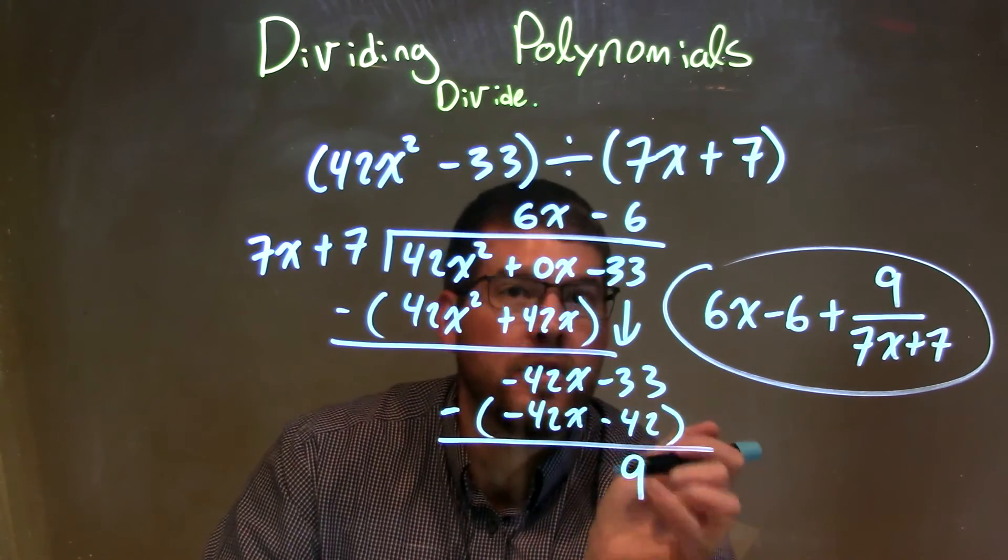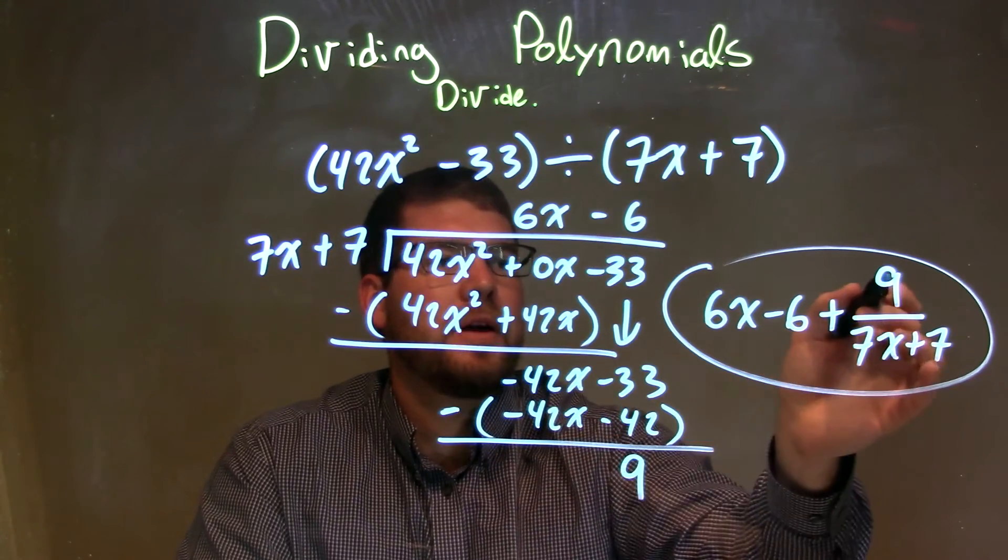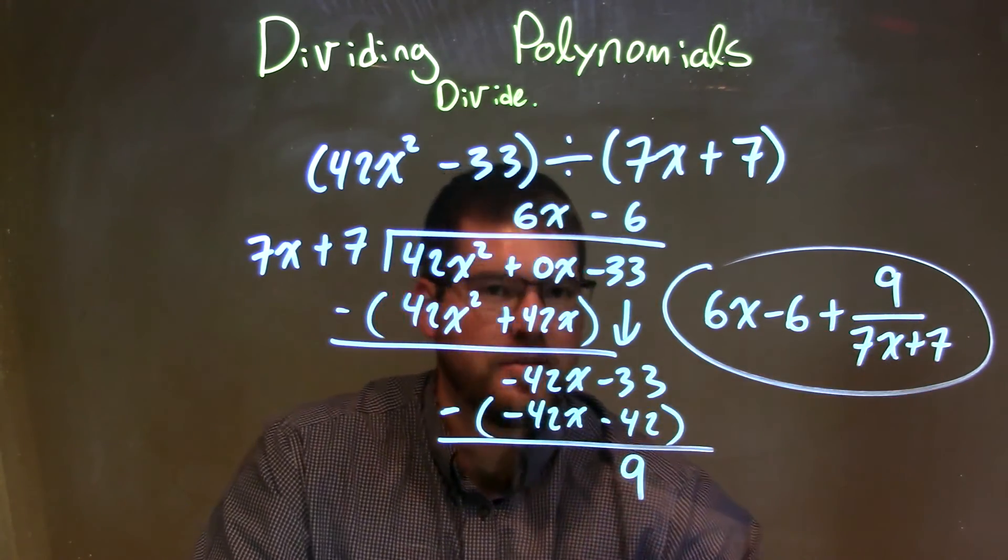Great. That's our remainder. And so our final answer here is just 6x minus 6 plus my remainder 9 over my divisor, which is 7x plus 7.